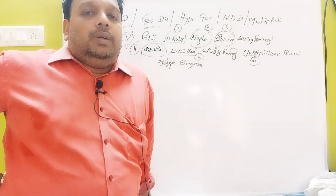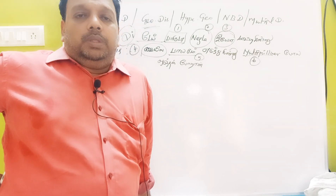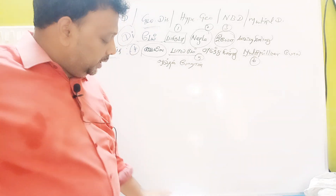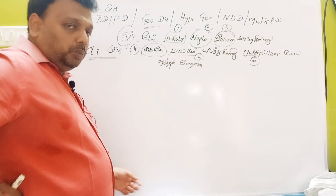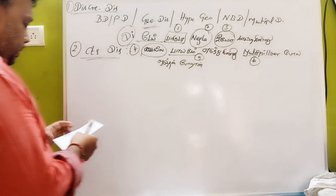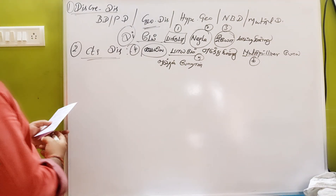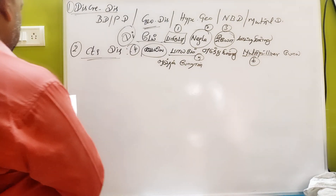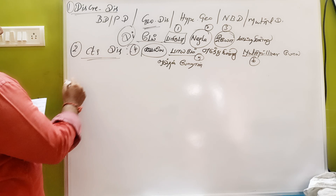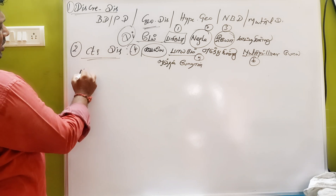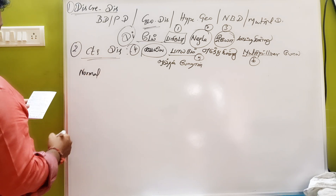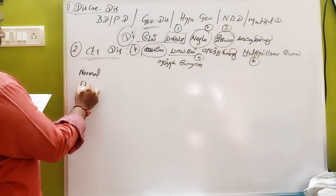When you have to do this, you have to use it as a discrete distribution, right? So you have to use it. Can you use it? Can you read it?